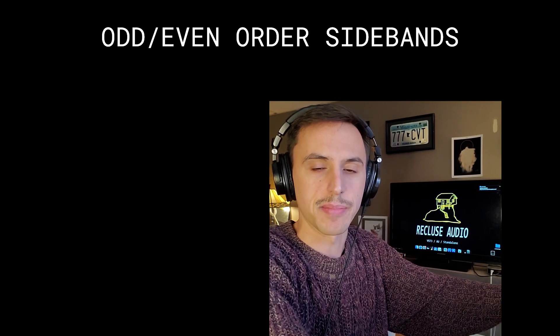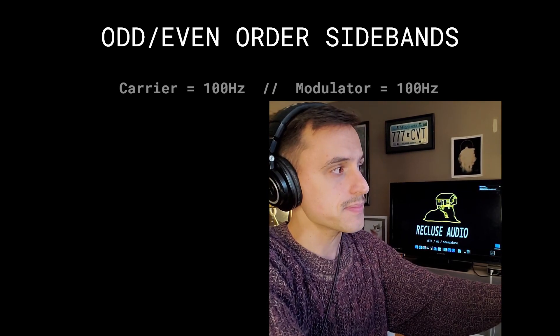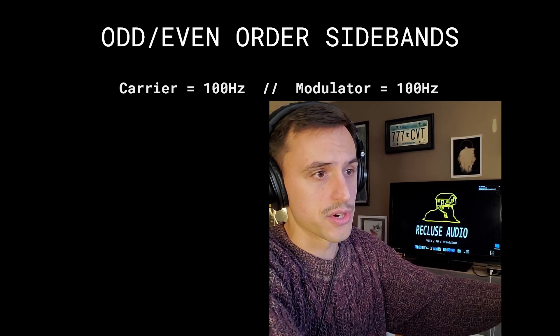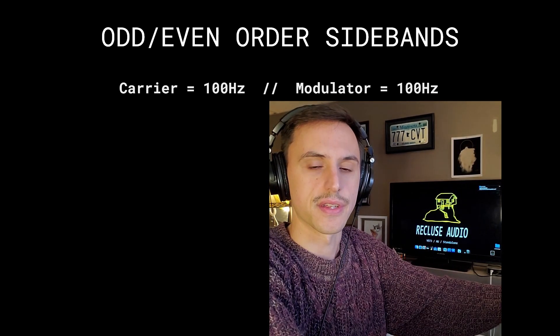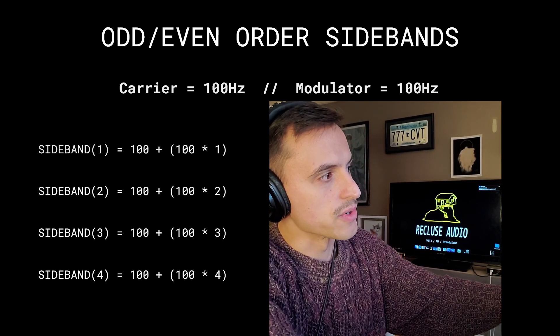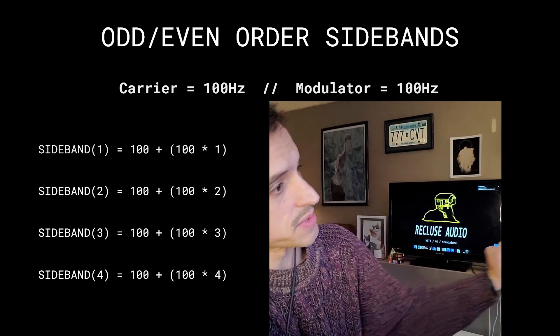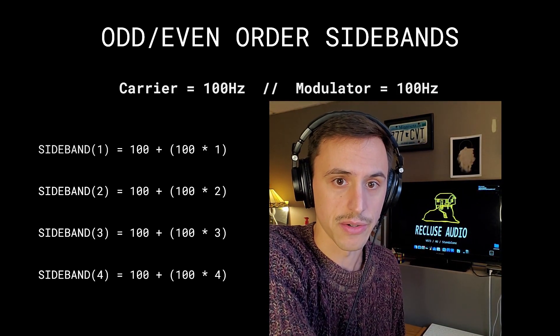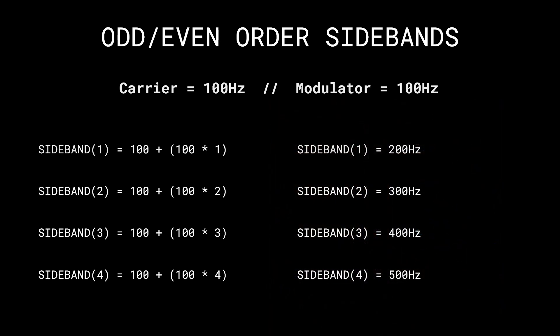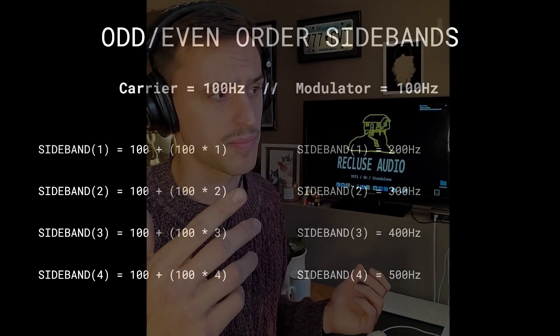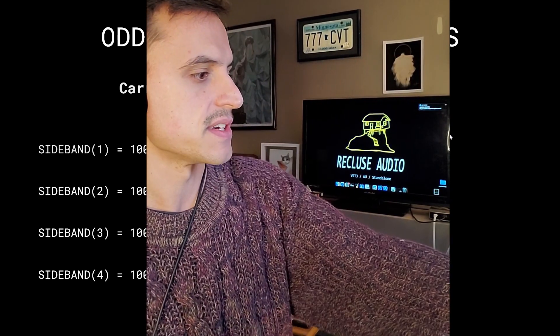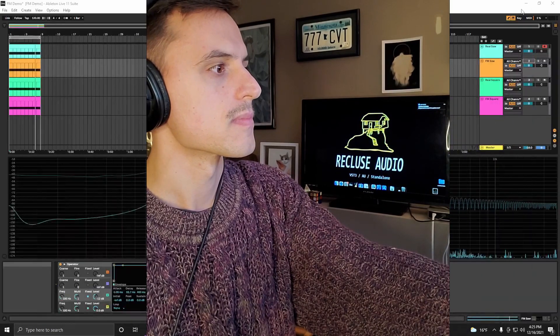Odd and even order sidebands — like the pulse or the sawtooth wave. Let's say we have a carrier of 100 Hz and a modulator of 100 Hz: 100 plus 100, 100 plus 200, 100 plus 300, 100 plus 400. That's a lot like how we figured out harmonics in the first place — 100 for the fundamental, 200, 300, 400, 500. So it really creates the same spectrum as these basic wave shapes. This is by far not the limitation of FM synthesis, but maybe it'll give you an easier concept of it if it's been unfamiliar to you. Let's go to Ableton now and test it out.